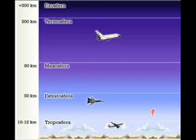The stratosphere is the second layer of the Earth's atmosphere. As it rises, the temperature increases in the stratosphere. Ozone causes the temperature to rise as it absorbs the sun's harmful light and converts it into heat.